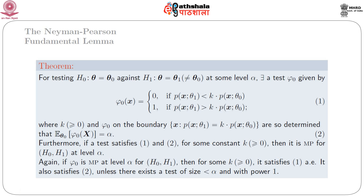Here alpha belongs to the open interval (0,1) and alpha is prefixed. Furthermore, if a test satisfies conditions 1 and 2 — equation 1 corresponding to phi naught(x) and equation 2 corresponding to E_{theta naught}[phi naught(x)] = alpha — then the test is of size alpha. If phi naught is most powerful at level alpha for H naught against H1, then for some k ≥ 0 it satisfies condition 1 almost everywhere. For the proof, we first give the existence part and then the sufficient part.